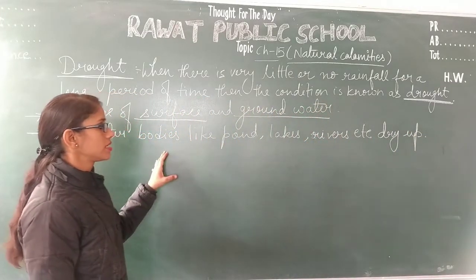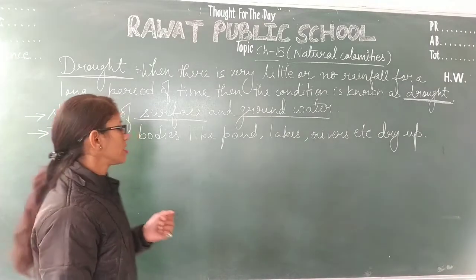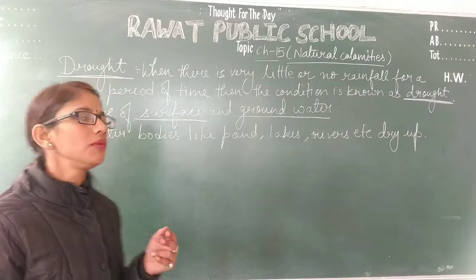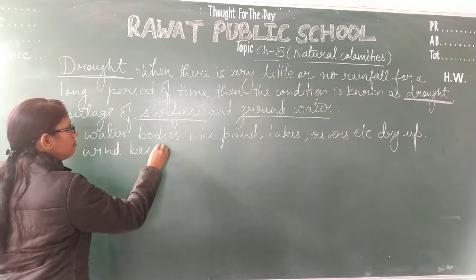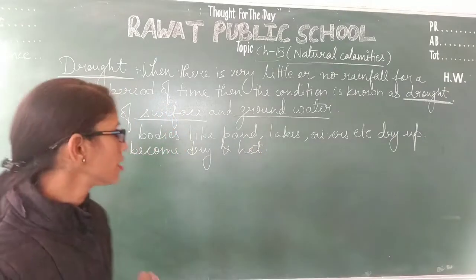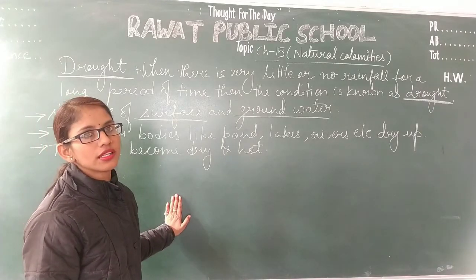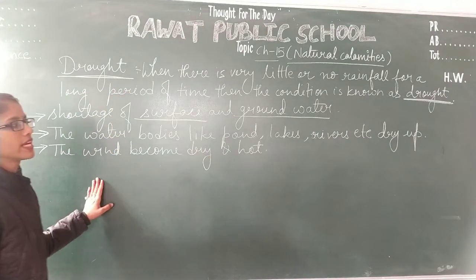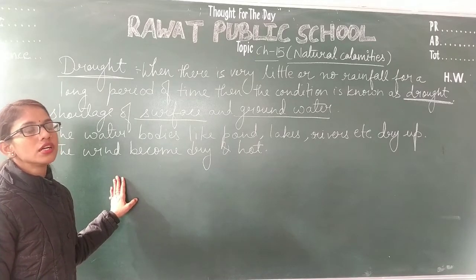As a result of water bodies drying up, the wind also becomes dry and hot in that region. The states in India where drought generally takes place include Rajasthan, Maharashtra, Andhra Pradesh, Odisha, and Karnataka.